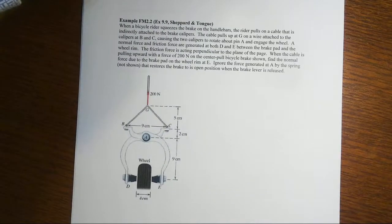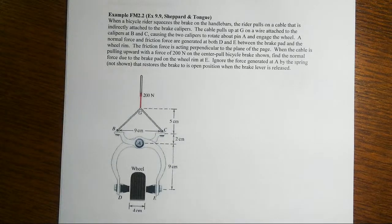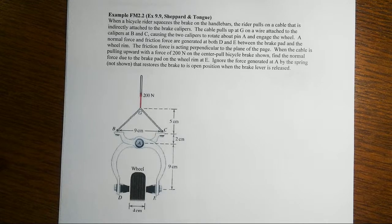All right, in this next example of analyzing a machine, we're going to take a look at a set of brakes for a bicycle. Now these are sort of traditional brakes in the sense of center pull brakes.